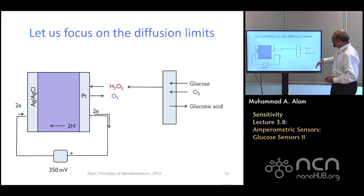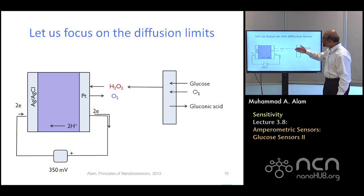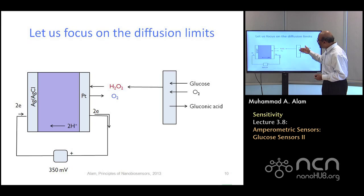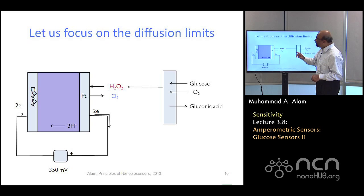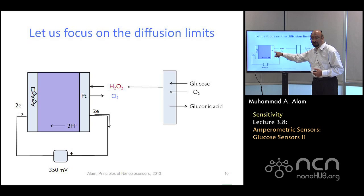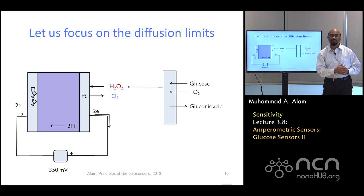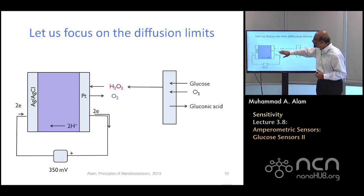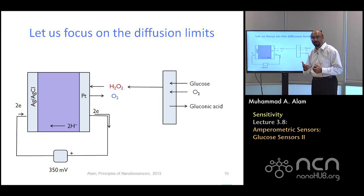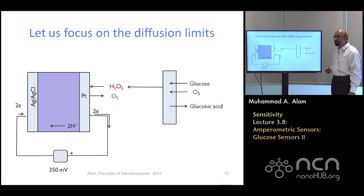This is the basic reaction: glucose is plentiful, being catalyzed, producing hydrogen peroxide. Two places diffusion limits could arise: first, glucose concentration is very small, so it takes time to arrive because it's consumed fast by the electrode. Second, the diffusion of hydrogen peroxide itself away from the electrode could be slow. If hydrogen peroxide hangs around close to the electrode, it starts the reverse process, diminishing the current. This parasitic reverse current compromises linearity.